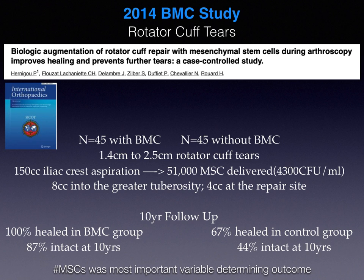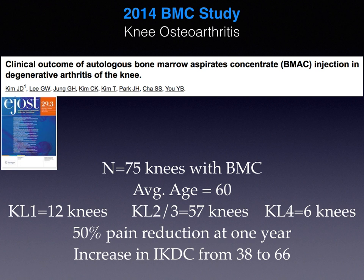Here's a 2014 study published by Dr. Kim and others, titled 'The Clinical Outcome of Autologous Bone Marrow Aspirate Injection in Degenerative Arthritis of the Knee.' This relatively large study treated 75 knees with a single intra-articular bone marrow concentrate injection. Average age was 60, with most knees in the middle grades of KL2 or KL3. Patients reported a 50% pain reduction at one year and an increase in their IKDC outcome measures from 38 to 66 — a statistically significant decrease in pain and increase in function.